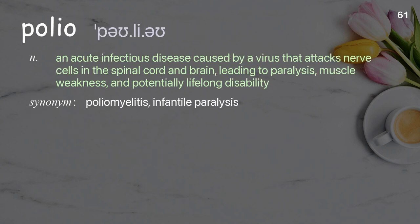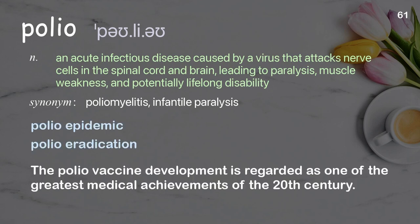Polio: an acute infectious disease caused by a virus that attacks nerve cells in the spinal cord and brain, leading to paralysis, muscle weakness, and potentially lifelong disability. Examples: polio epidemic, polio eradication. The polio vaccine development is regarded as one of the greatest medical achievements of the 20th century.